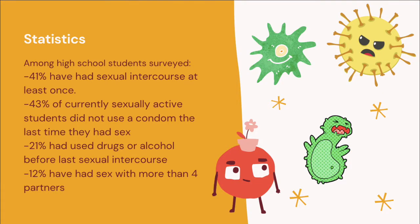Just some statistics for you: among high school students surveyed, 41% have had sexual intercourse at least once. So we have a little under half of high school students engaging in sexual activity. 43% of currently sexually active students did not use a condom the last time they had sex. And 21% said that they've used drugs or alcohol before their last sexual intercourse — meaning they're probably not being careful about preventing pregnancies or transmitting sexually transmitted infections.